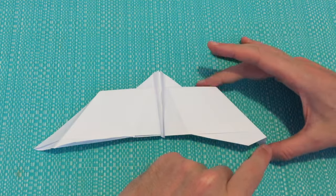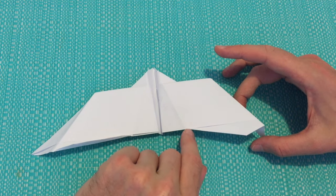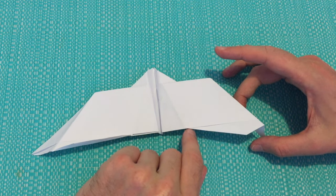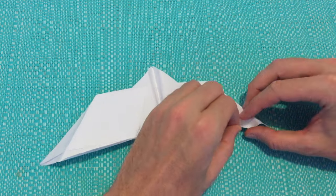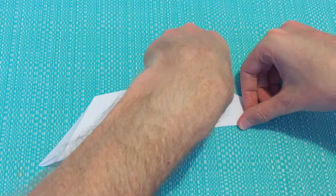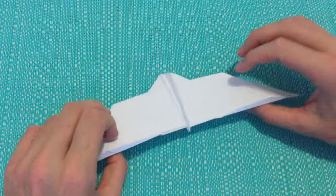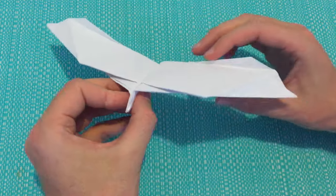And the same for the other side. So we'll fold that up. And then we can turn our bat plane around.